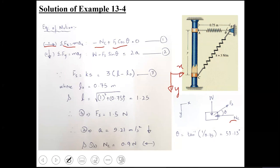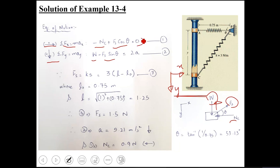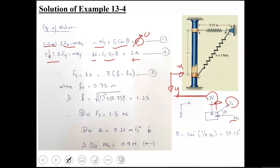For the Y-direction equation ΣFy = MAy: taking positive Y downward, the weight acts downward (positive) and the Y-component of spring force acts upward (negative). Since there is no X-direction motion, MAx = 0. In the Y equation, mass is 2 kg and acceleration A is unknown. Overall, there are three unknowns: normal force Nc, spring force Fs, and acceleration A.